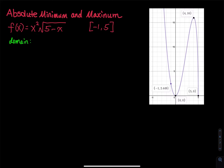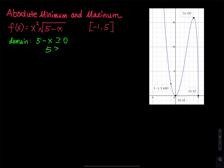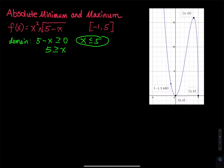Since there is a square root, let's talk about the domain of the given function. For square root, we know that square root of a negative is undefined. So therefore, the radicand 5 minus x has to be greater than or equal to 0. Adding x to both sides gives 5 greater than or equal to x, so x must be less than or equal to 5. That's why on the picture on the right, the graph stops at x equals 5.